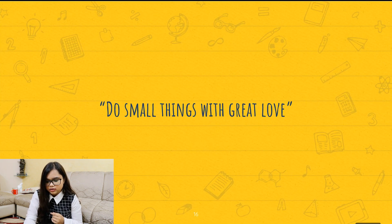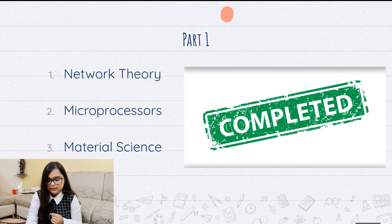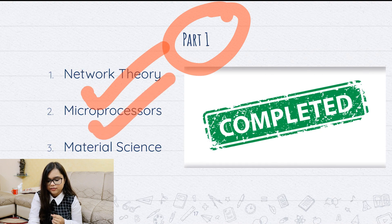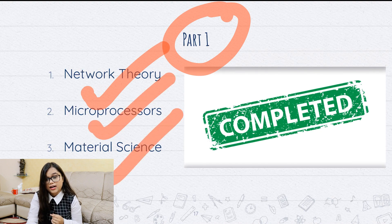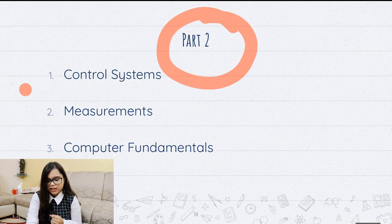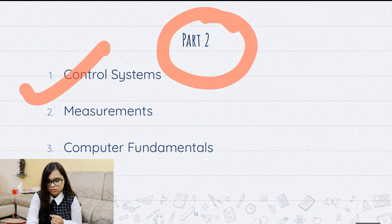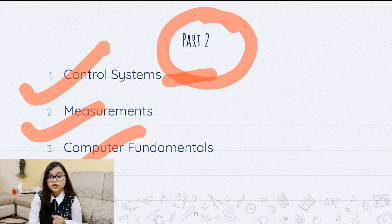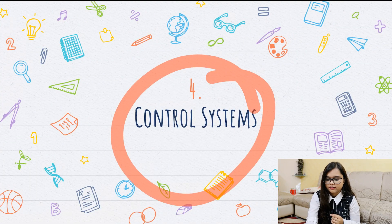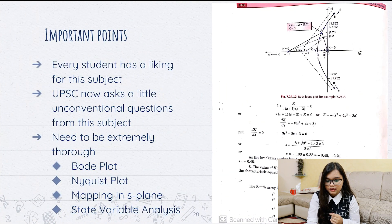In Part 1, which I have already made, we completed subjects like Network Theory, Microprocessors, and Material Science. Now in Part 2, we will discuss Control Systems, Measurements, and Computer Fundamentals. So let us begin with Control Systems.